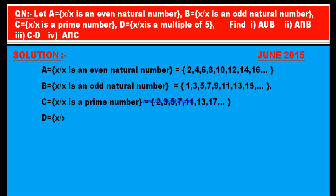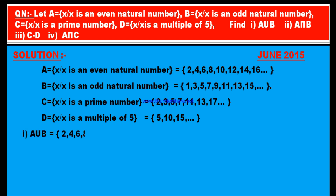D = {x | x is a multiple of 5}. The multiples of 5 are 5, 10, 15, and so on. Now let us find A union B. A = {2, 4, 6, 8, 10, 12, 14, 16, ...} union B.